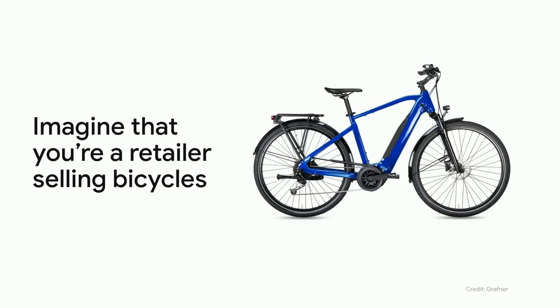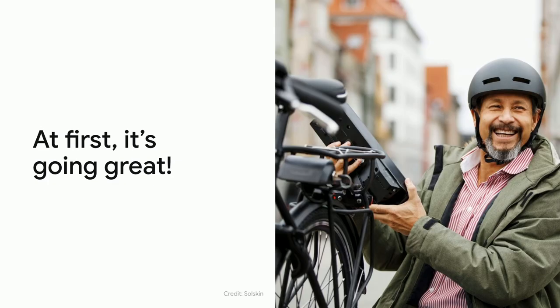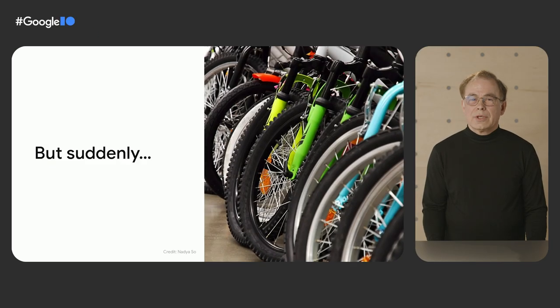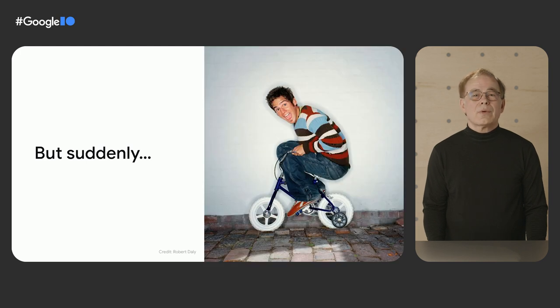Let's start with a thought experiment. Imagine that you're a retailer selling bicycles. Like any retailer, you want to optimize your inventory, so you train a model using data from your app to predict demand. That's a great idea, and at first it's going great — you're ordering just the right amount of each type of bicycle, and your business is thriving. But then, slowly at first, you start making mistakes in your ordering. It takes you a while to notice, and then you realize that you either have too many bicycles, or not enough, or the wrong type of bicycles. Not good. But why? Your model was doing great, so why did it start getting the forecast wrong?